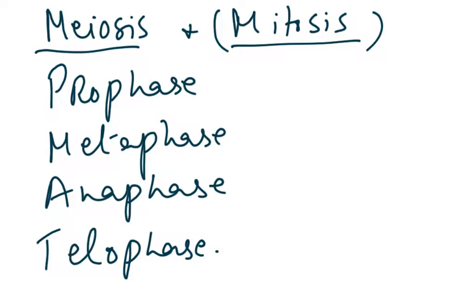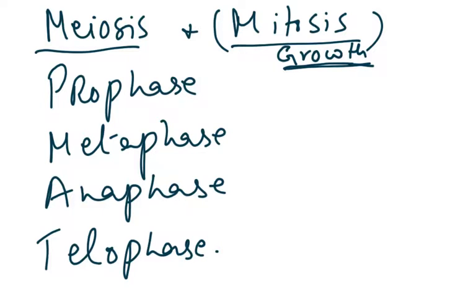Cell division is of two types: meiosis and mitosis. Mitosis takes place everywhere in the body and it is required for growth basically. I will not talk about this part of the syllabus here, because it is part of the AS level syllabus.